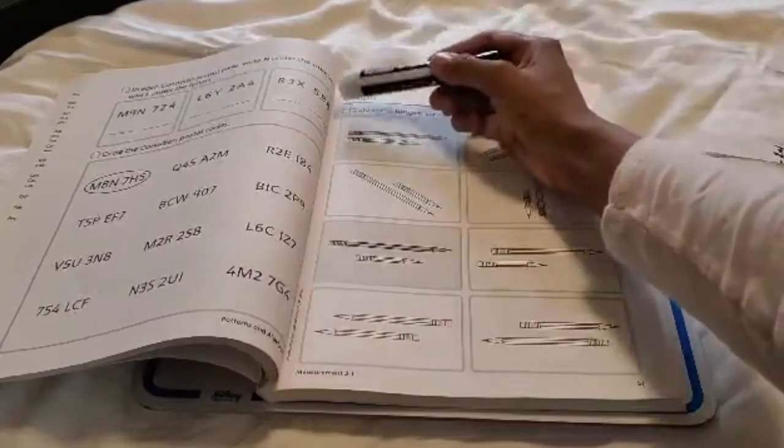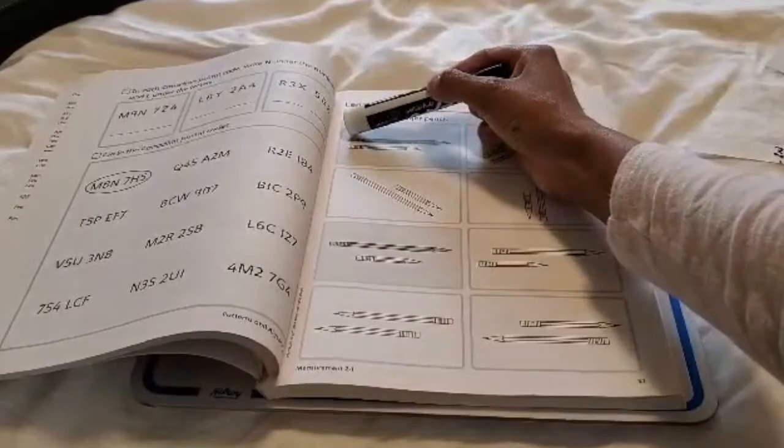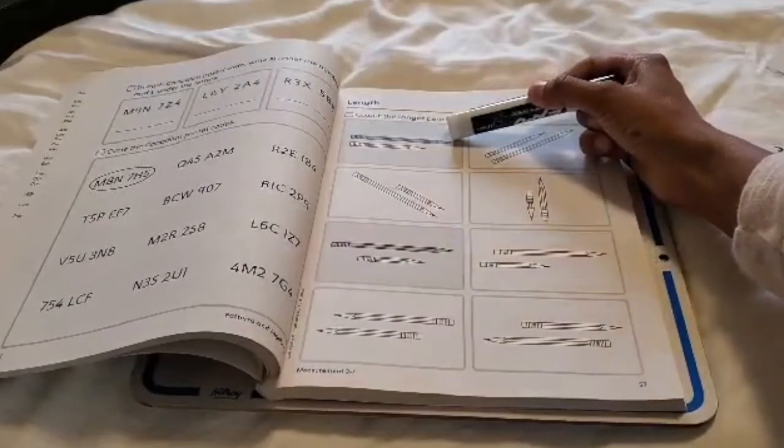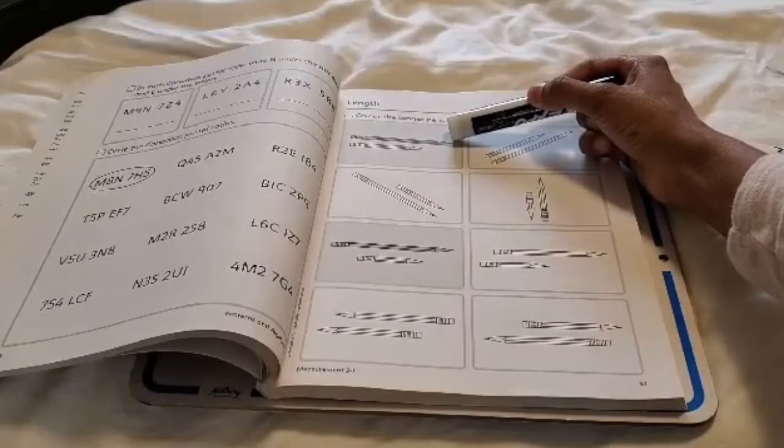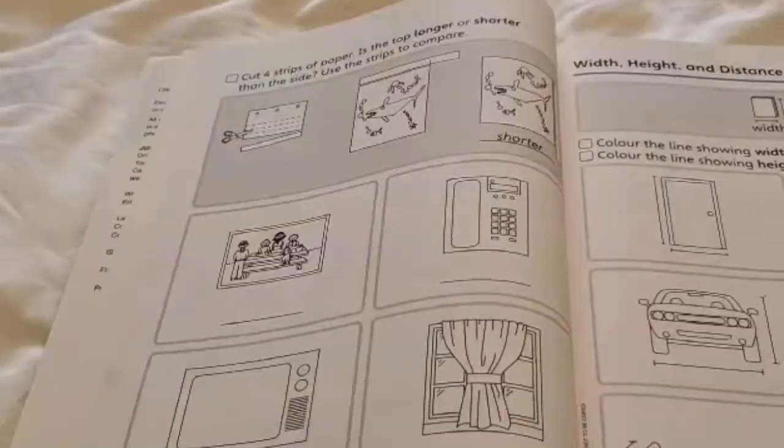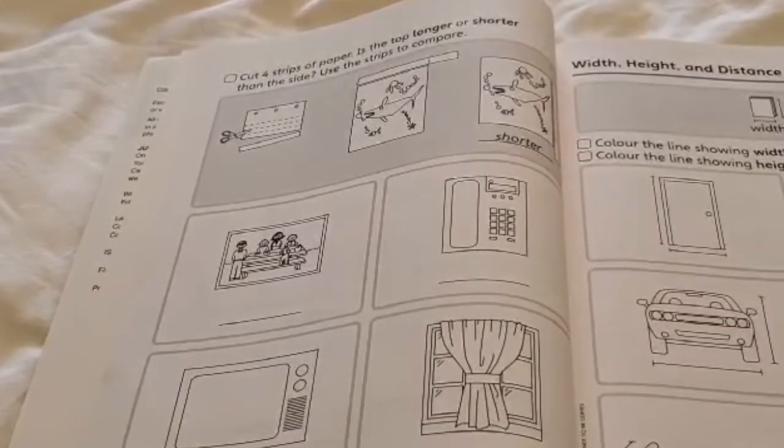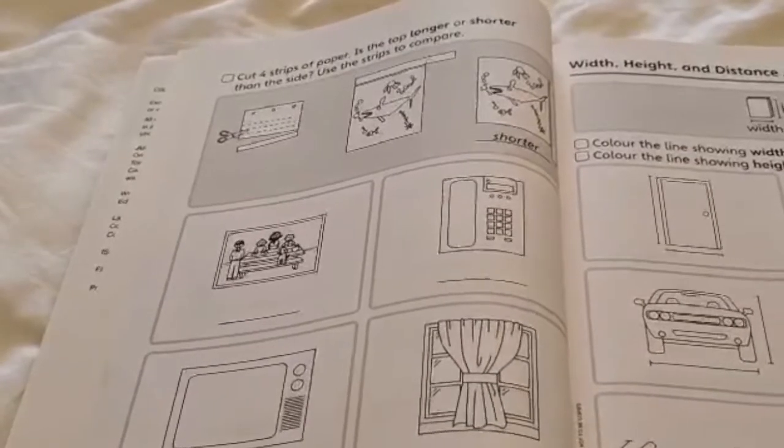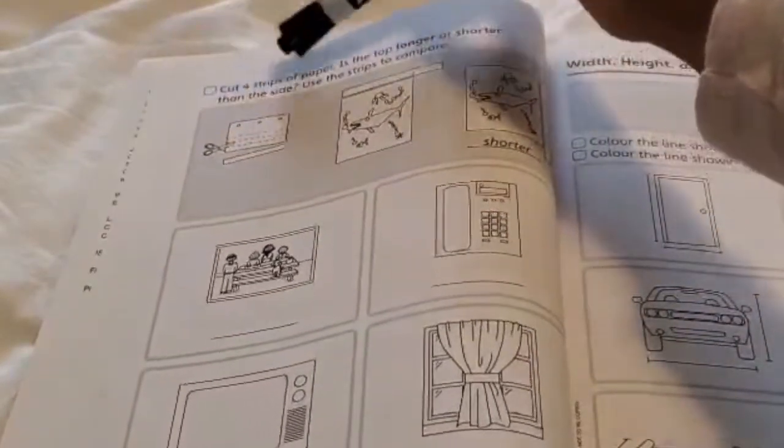Remember that length is how long something is. For length, you always start at one end and measure until you get to the other end to find out the length. So on page 58 of Jump Math 2.1, the page says cut four strips of paper.